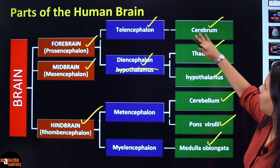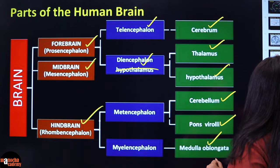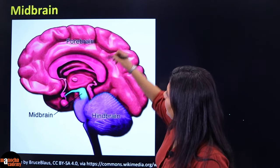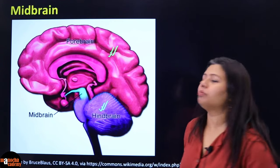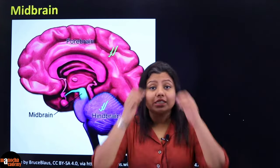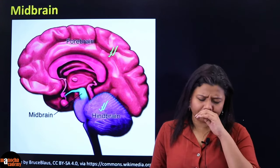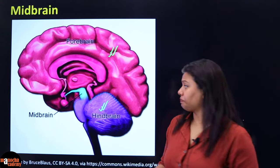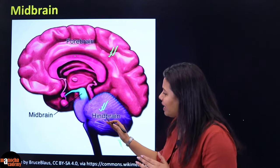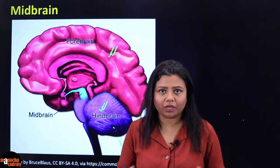Coming to the midbrain: the midbrain is only this small part which is connecting the forebrain to the hindbrain. We can say that the midbrain is a small stalk that connects the forebrain to the hindbrain. It does have different parts but we do not go into the details in this class — that is covered in class 11 if you take up biology. So the midbrain is basically a passage between the two: if the hindbrain has to send any information to the forebrain or vice versa, it has to pass through the midbrain.